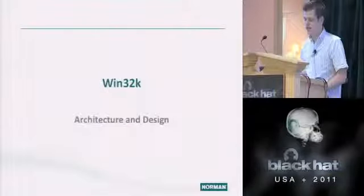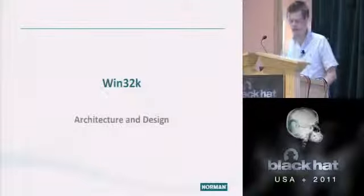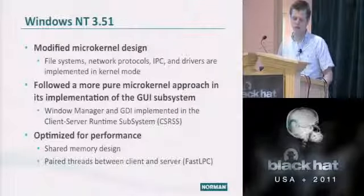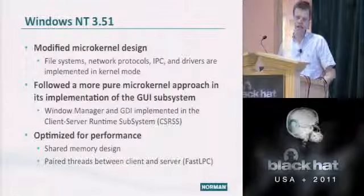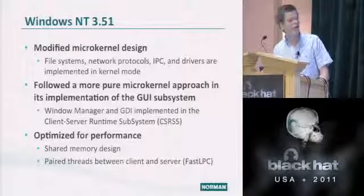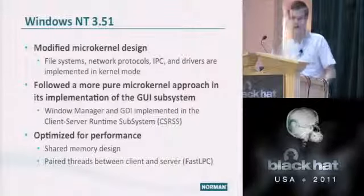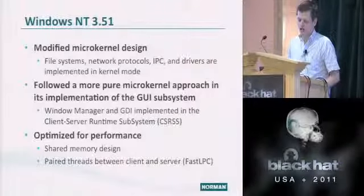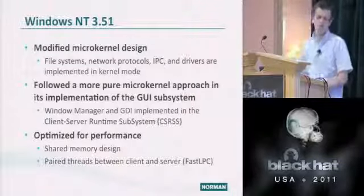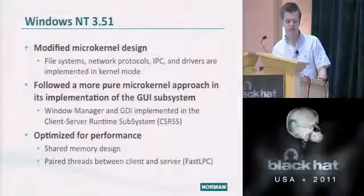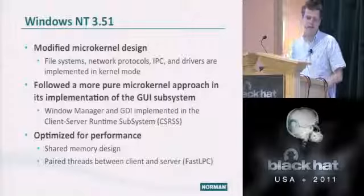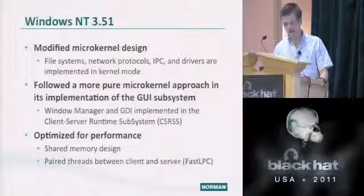Moving on to Win32K: the older version of Windows followed a modified microkernel design — file systems, network protocols, and drivers were all in kernel mode. But in NT 3.51, they followed a more pure microkernel approach for the GUI subsystem, implementing the window manager and GDI in user mode. They used optimizations like shared memory between client and server processes and paired threads to make context switching more efficient.